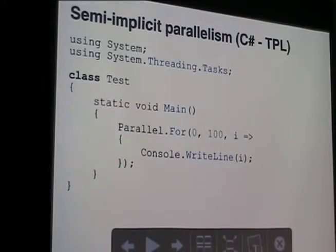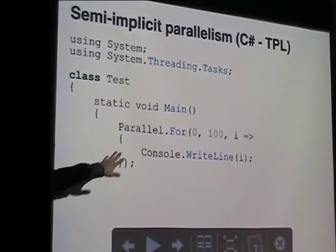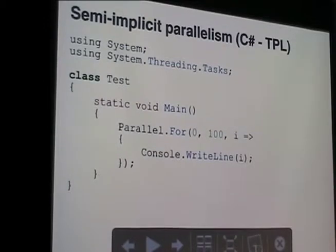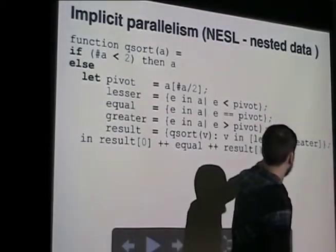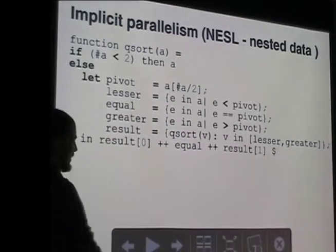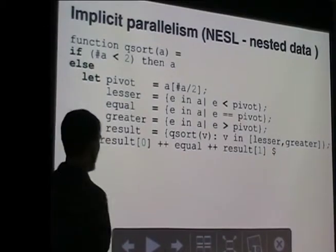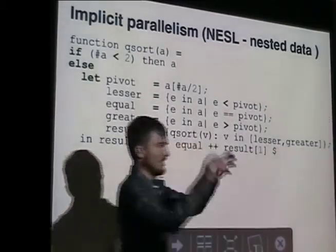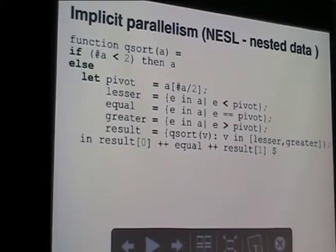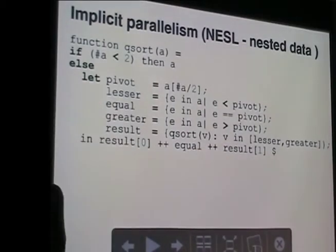This is semi-implicit - we've got a parallel for loop. We're saying we want to do that in parallel, but we're not saying how - we're not saying start up a thread, start up another thread and do this computation. We're just saying 'parallel for loop.' And this is a program in a language called Nestle. The benefit is that in Nestle, list comprehensions are done in parallel. So this is a parallel quicksort - we're putting lesser in a bucket, equal in a bucket, greater in a bucket, and running the quicksort function over those buckets. You can see how it's doing parallel at each level - it's implicit because we're not explicitly saying 'do this in parallel', we're just doing a list comprehension and those comprehensions are parallel in this language.